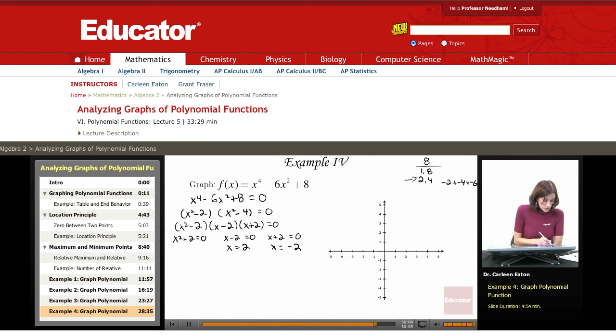Now I'm going to look over here, x squared equals 2. Taking the square root of both sides gives me x equals plus or minus the square root of 2. So I have four zeros.